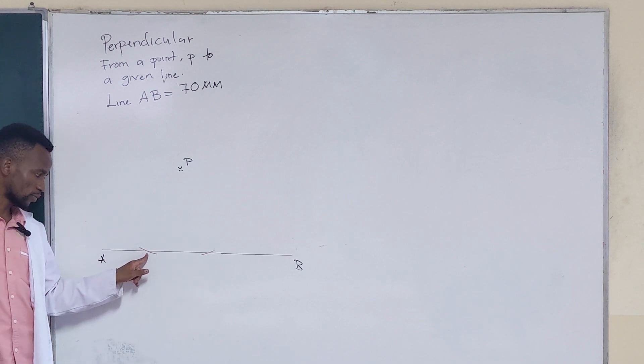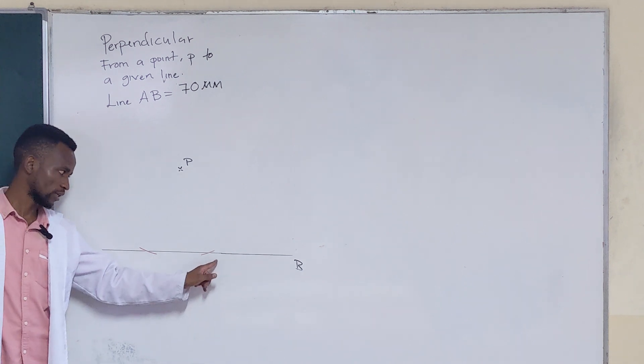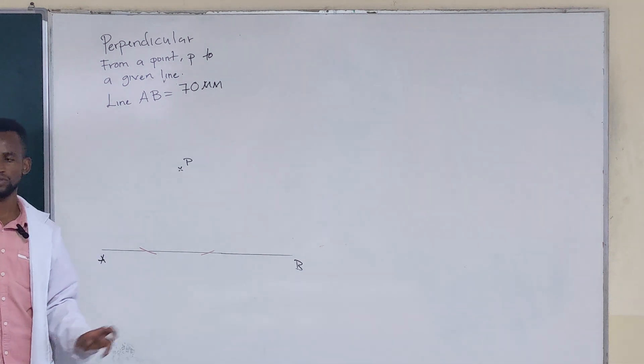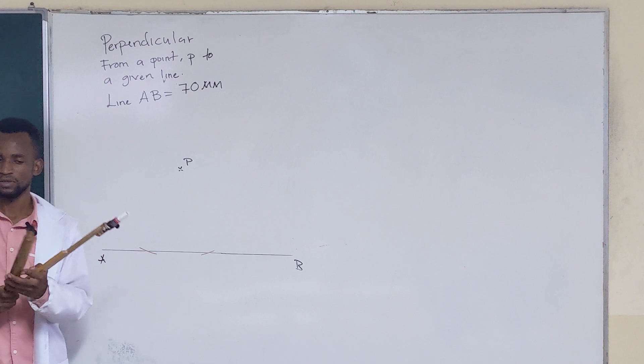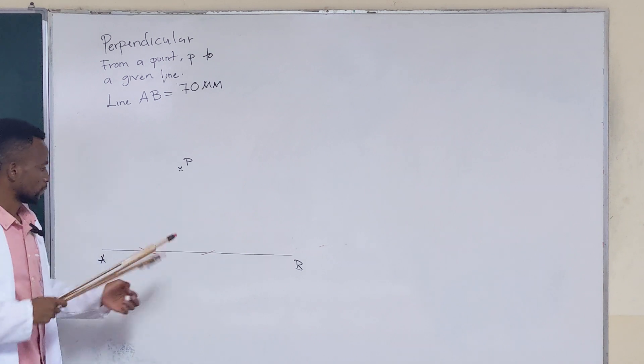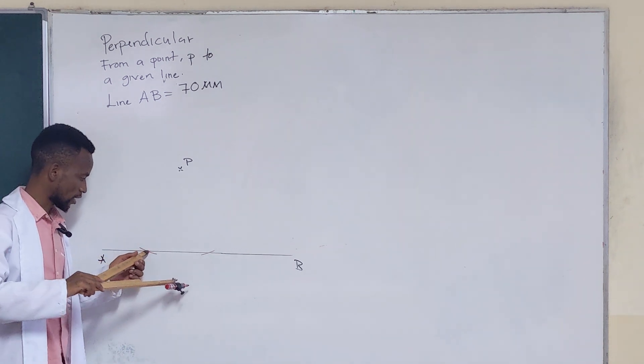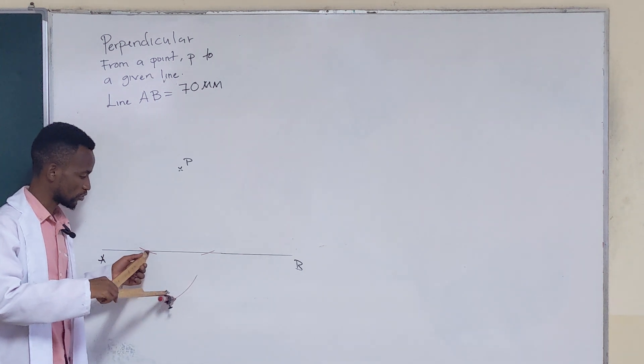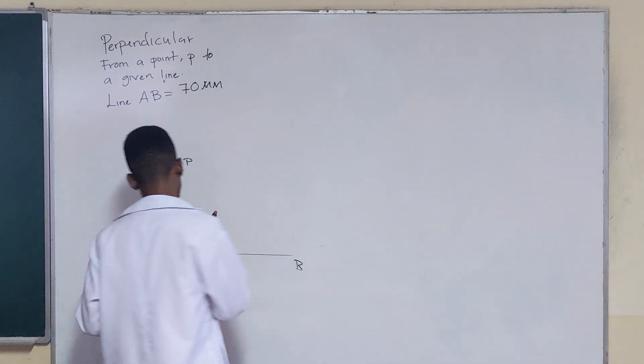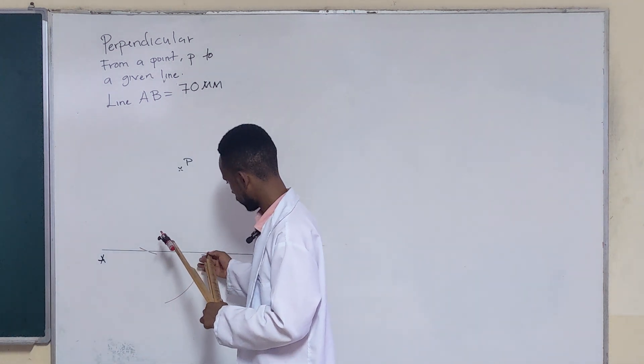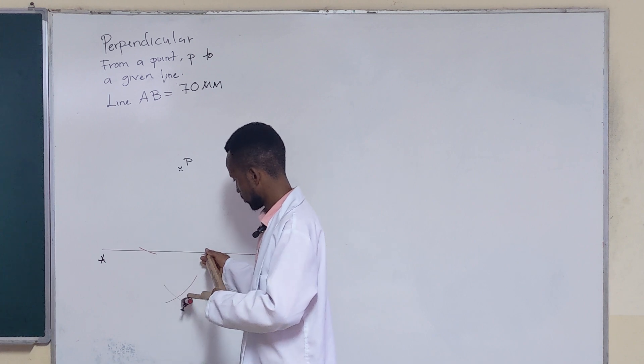And then you stand at this point, you strike an arc, you stand at this point, you strike an arc. The arcs should just meet. So I can even reduce it a bit, any radius, as long as the arcs are able to meet from the two points. Strike an arc from this other point, strike an arc.